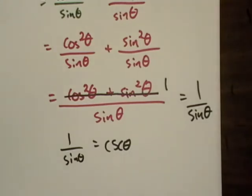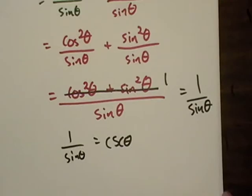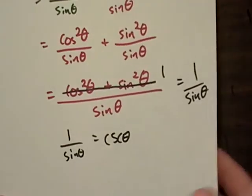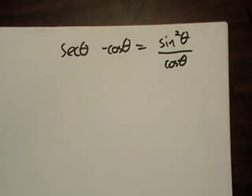So let me see if I can't pull another one out of the hat real quick. Secant theta minus cosine theta. Okay, how about this one? I haven't even worked this out, so I might run into a snag as well.